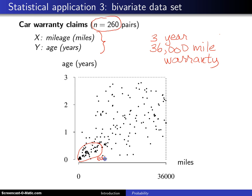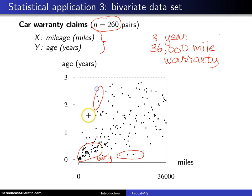The dots down here are early claims — something went wrong very early. The dots over in this region represent somebody putting a lot of mileage on their car: only a couple months have passed and they're already up over 20,000 miles, so these people might be delivering pizza or the like. And over here you can see a pair of cars that just aren't being used very much — they're not even at 10,000 miles yet and two years have already passed.